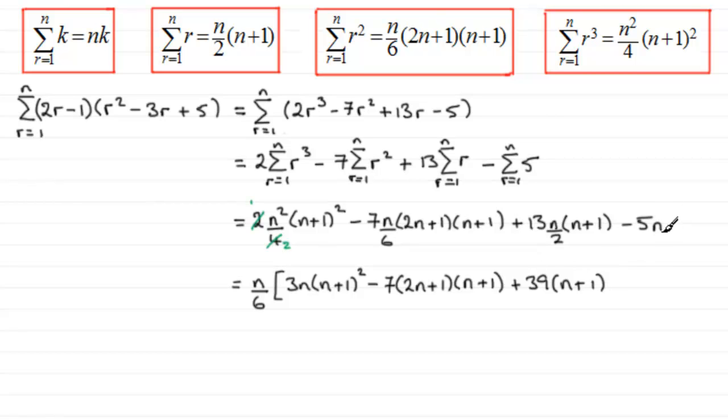And then for the minus 5n, the n's out the front, but I just need to multiply the 5 by 6, so that's going to be minus 30. So close off that square bracket. What we've got here now is just n over 6, and I'm going to expand the brackets.